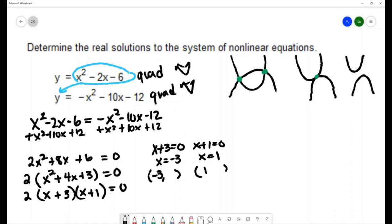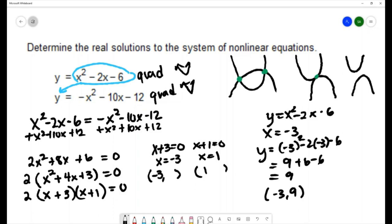I have the x coordinates, and I'll try to find the y coordinates. I'll use that first equation of y equals x squared minus 2x minus 6. If x is equal to negative 3, then y is negative 3 squared minus 2 times negative 3 minus 6. That's 9 plus 6 minus 6, and we get 9. So one of our solutions is negative 3, 9.